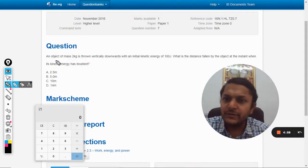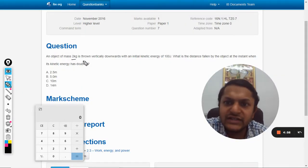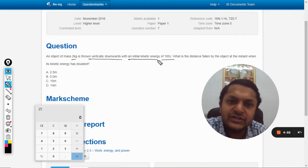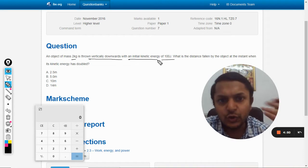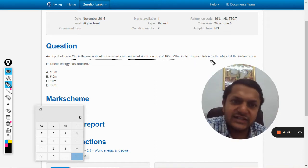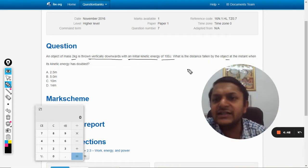In this question an object of mass 2 kg is thrown vertically downwards with an initial kinetic energy of 100 joule. What is the distance fallen by the object at the instant when the kinetic energy has doubled?